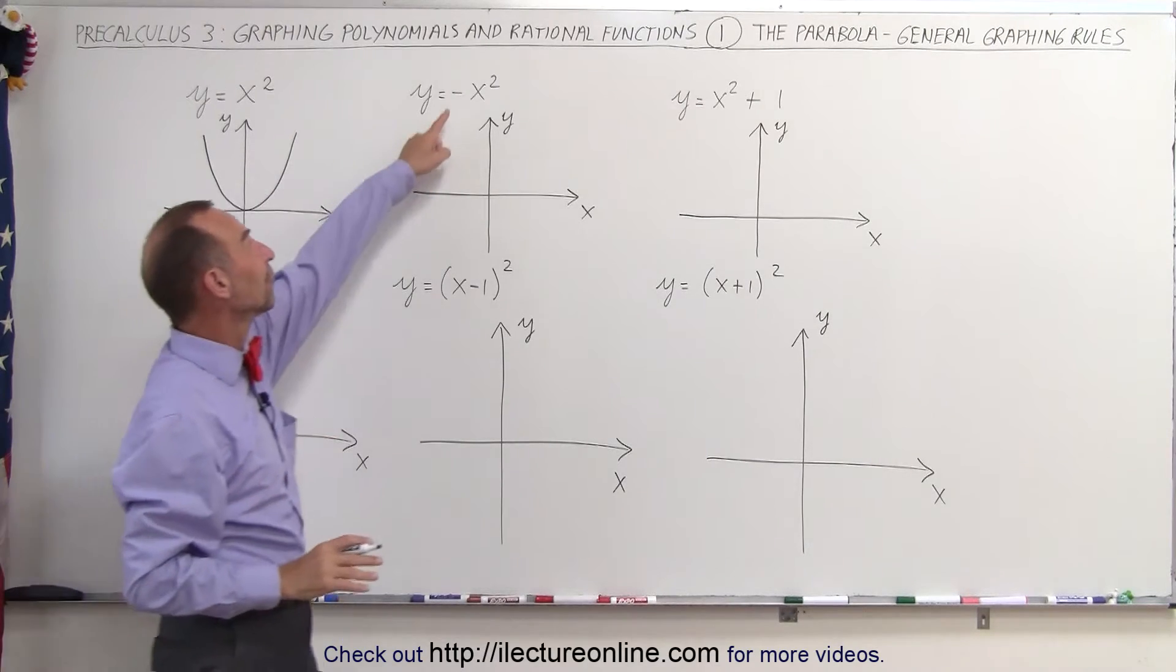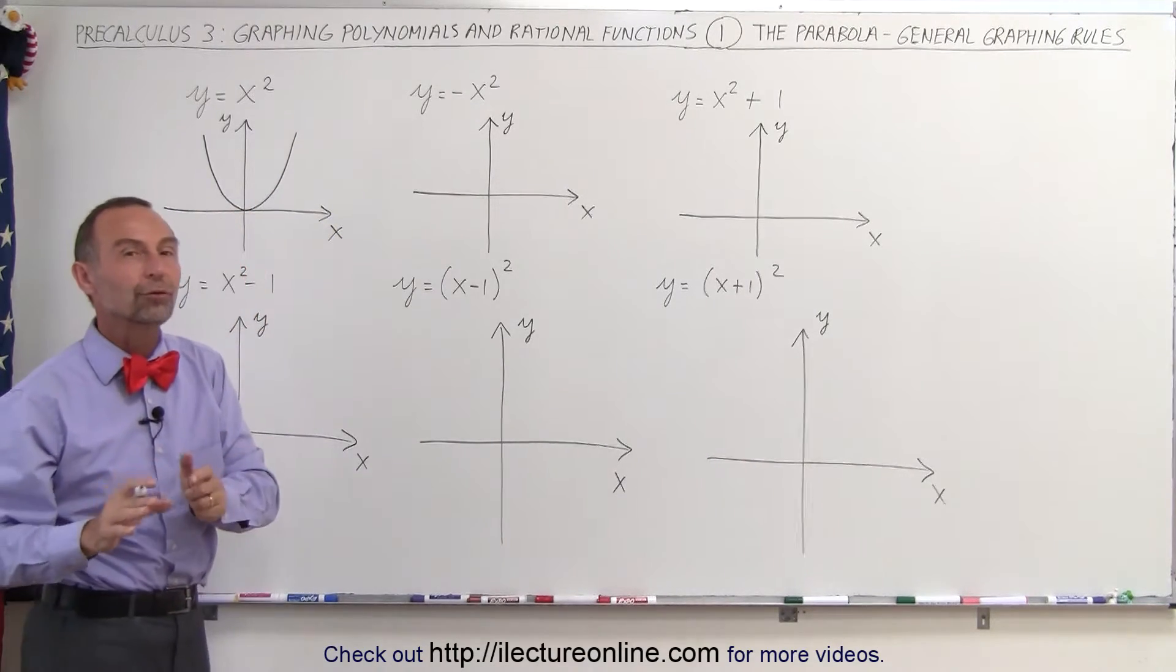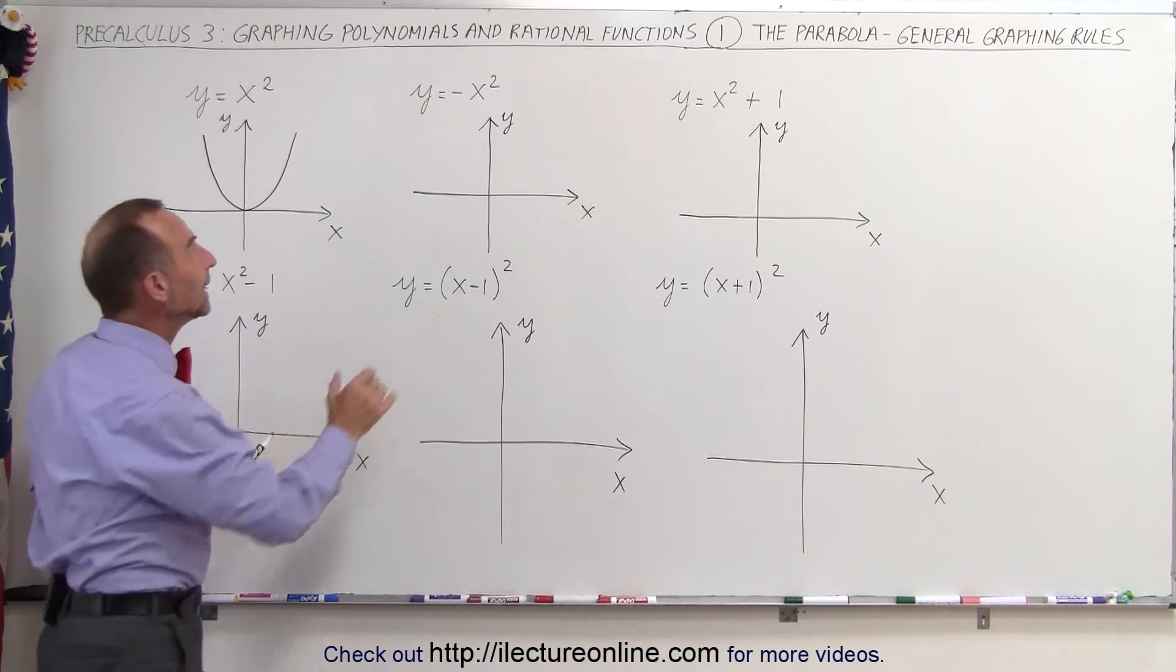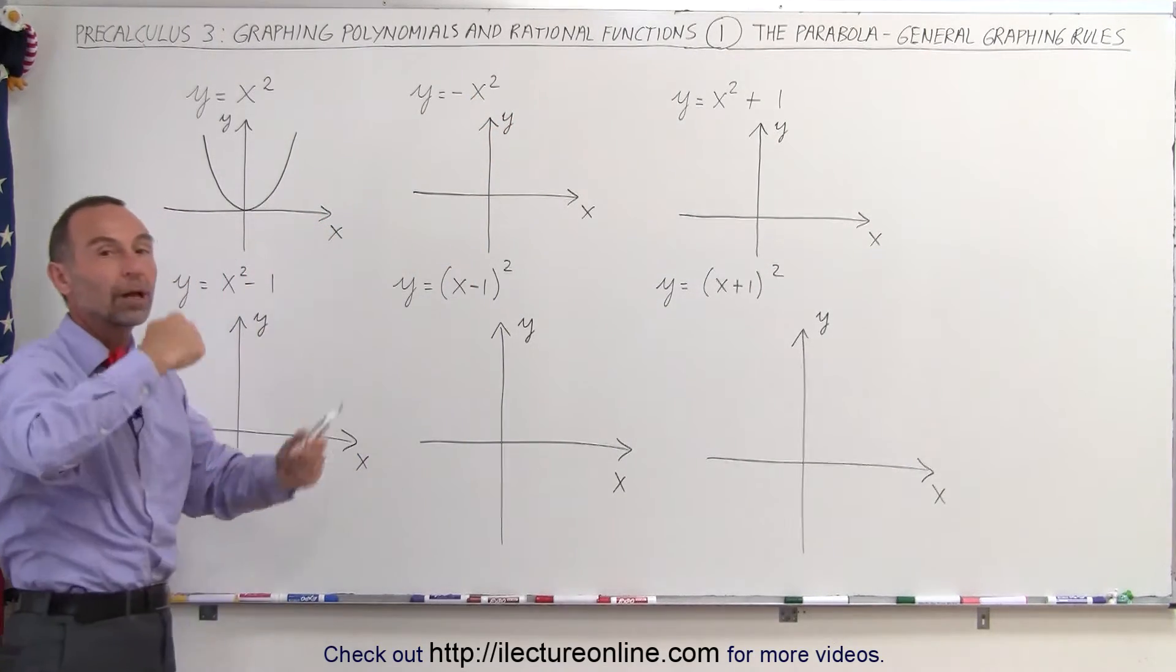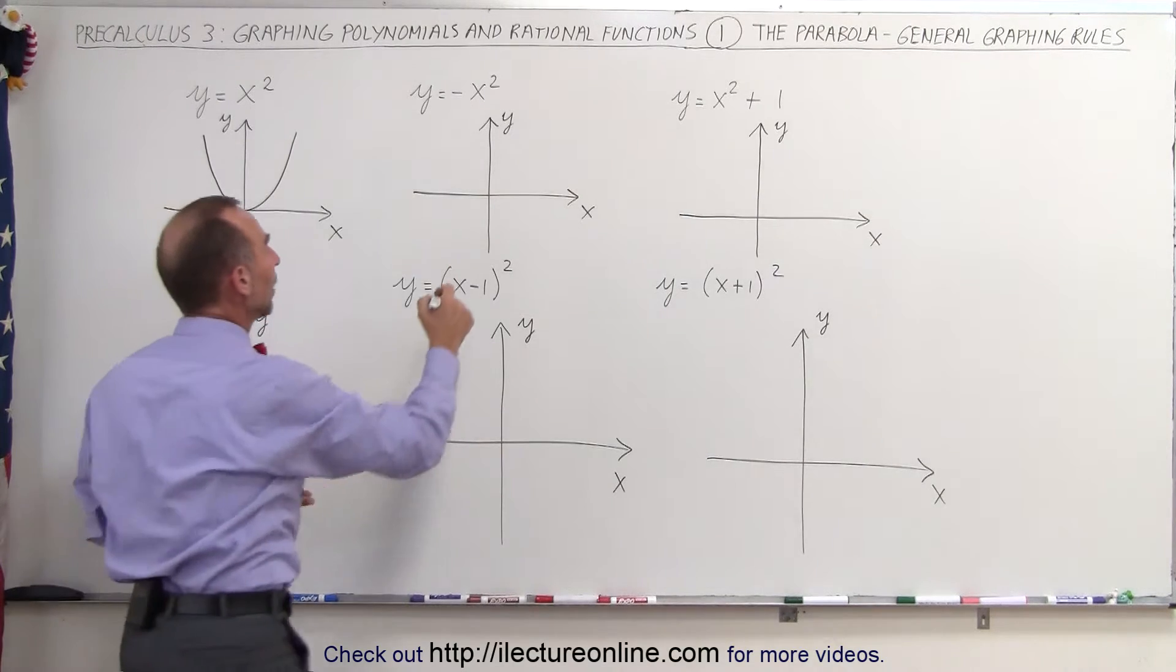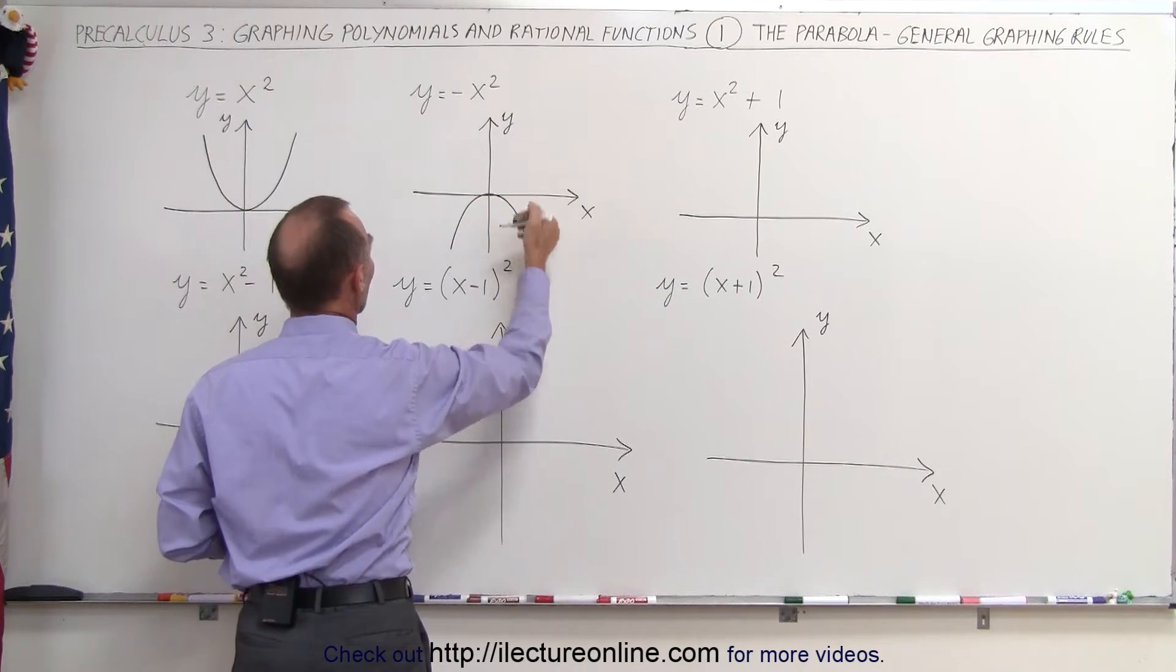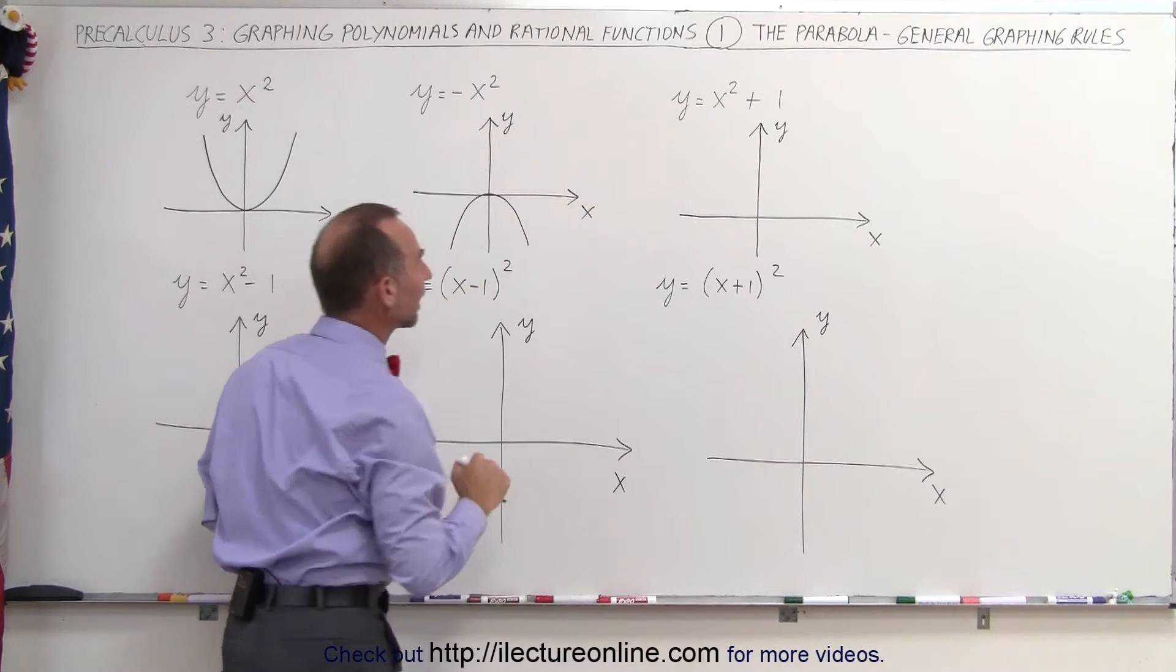If we now place a negative in front of it, and this is also true for any polynomial, the leading term, if we put a negative in front of it, it turns the whole polynomial over, the graph over. So the graph will now look like this, still with the vertex at the origin, but simply turned over like that.